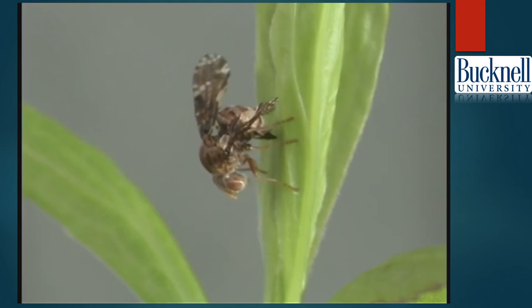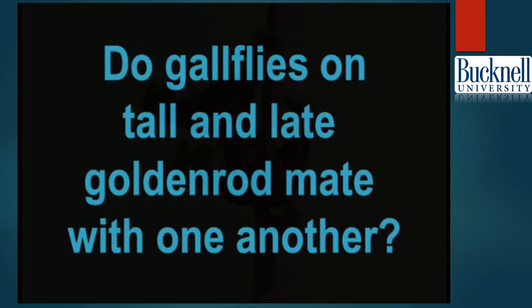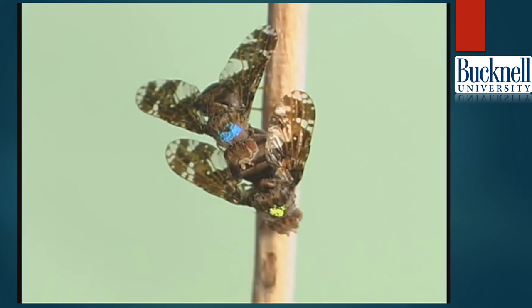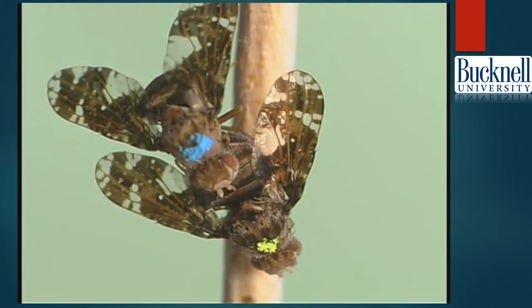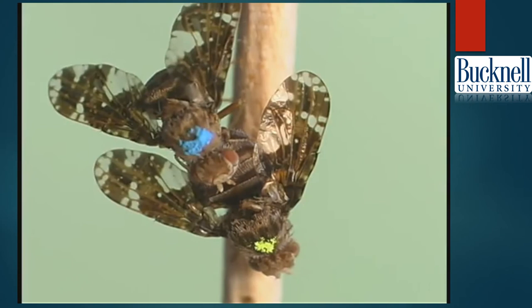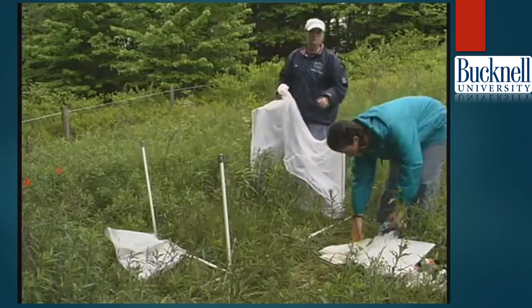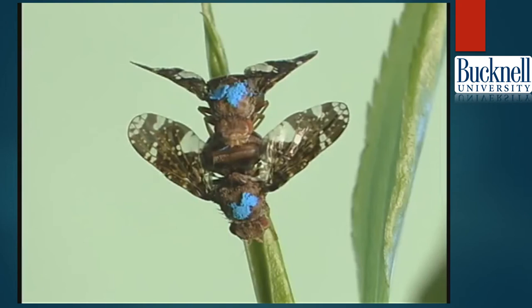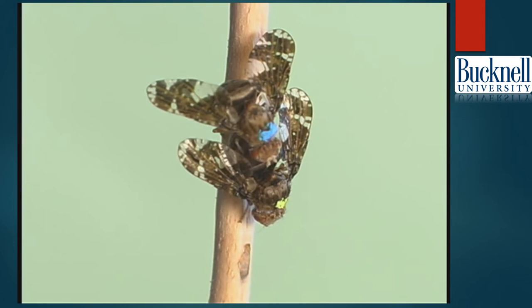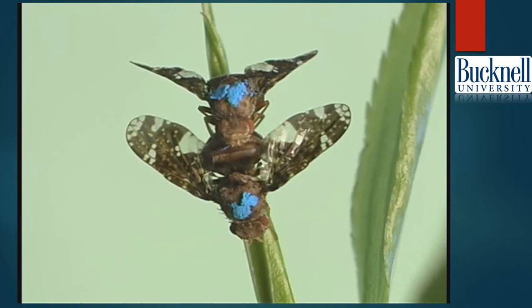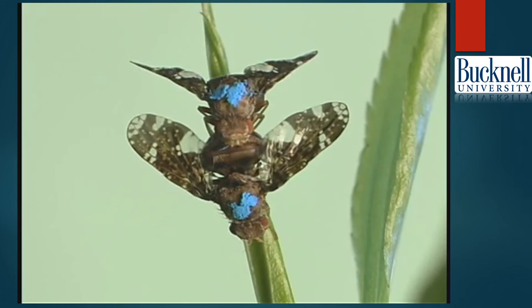To determine whether there is reproductive isolation, we looked at who they would mate with and where they would inject their eggs. Gall flies were marked with colored dots to keep track of flies from tall versus late goldenrod galls, since otherwise they appear virtually identical. Matings between them were performed in outdoor screen cages in the absence of host plants — in this case, mating occurred readily between the groups. Next, experiments were repeated with gall flies of each kind in the presence of both species of host plant. In contrast to the first experiment, each gall fly perched on its preferred host and subsequently mated with its own type of gall fly.